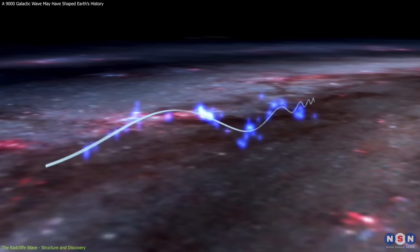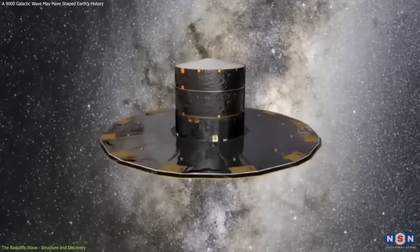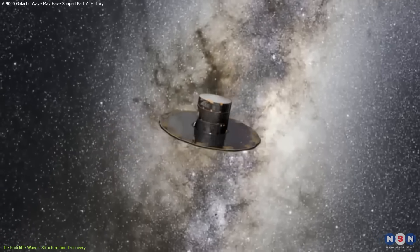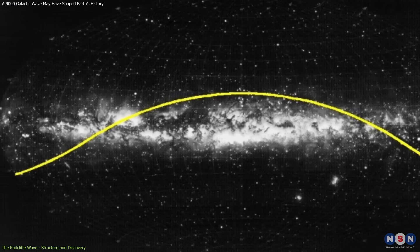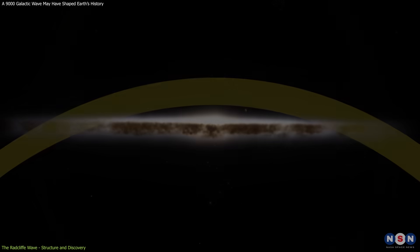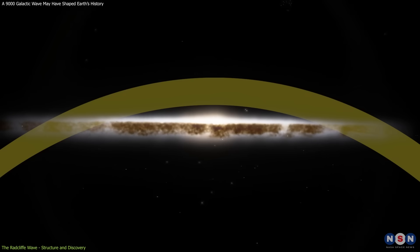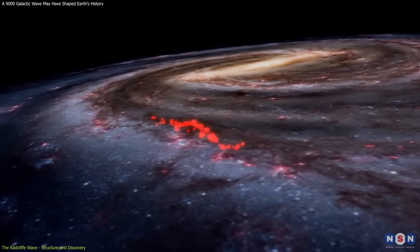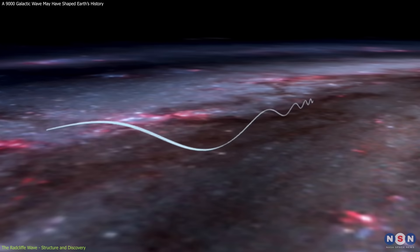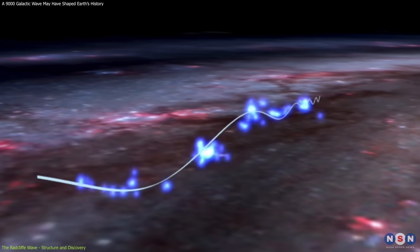What made this discovery groundbreaking was that, before Gaia, scientists believed star-forming regions were distributed randomly, or aligned along the Gould Belt, a hypothesized ring of star formation surrounding the solar system. The Radcliffe Wave overturned that view, showing that these regions are part of a larger, oscillating formation.